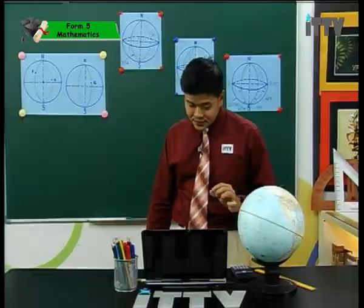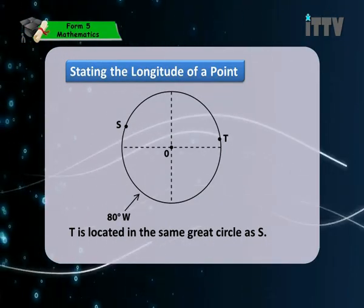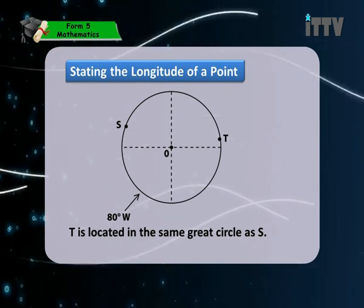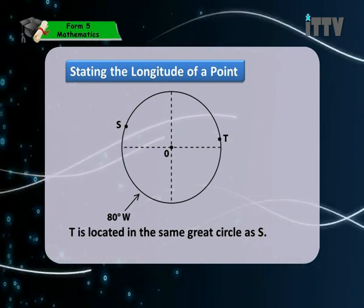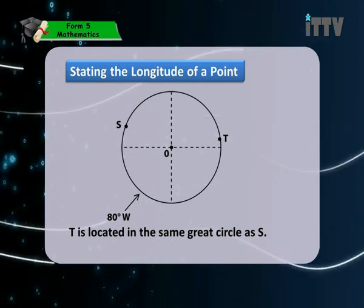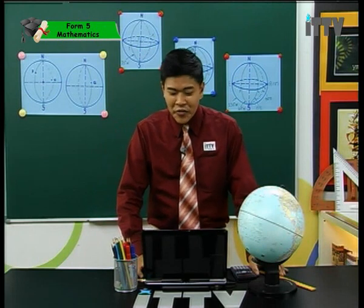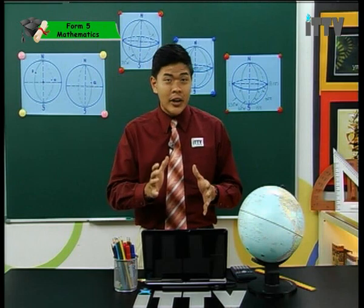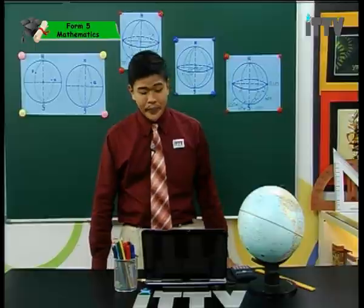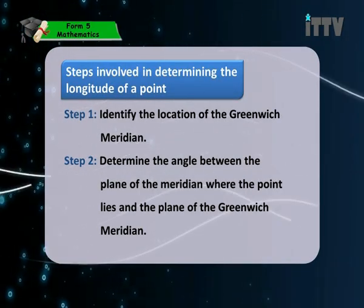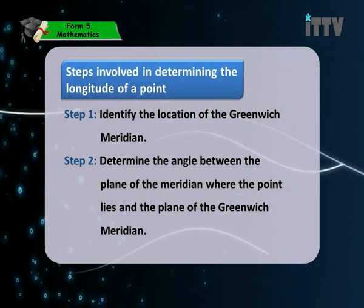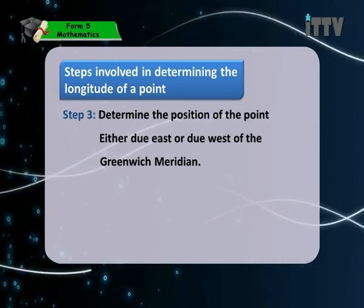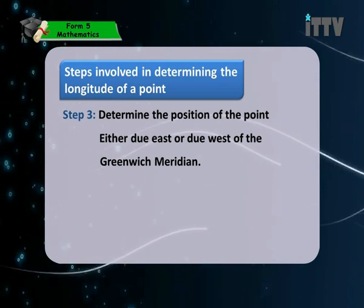Points S and T lie on the same great circle — T is on the meridian opposite to S. To determine the longitude of any point, follow three steps: step one, identify the location of the Greenwich meridian; step two, determine the angle between the meridian of the point and the Greenwich meridian; step three, determine whether the point is due east or due west of the Greenwich meridian.